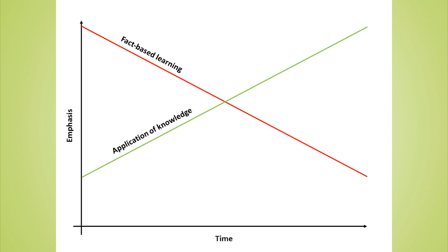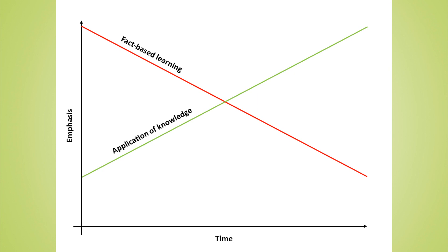So there has to be a balance between knowledge and application, and there has to be a transition as well. We're not flicking a switch — we're not saying to educators, 'okay, today's your first day at high school so now it's time to start using higher level thinking skills.' We have to say that when you first start learning there is an element of application, but because of your age and knowledge you're not able to apply that knowledge very well.